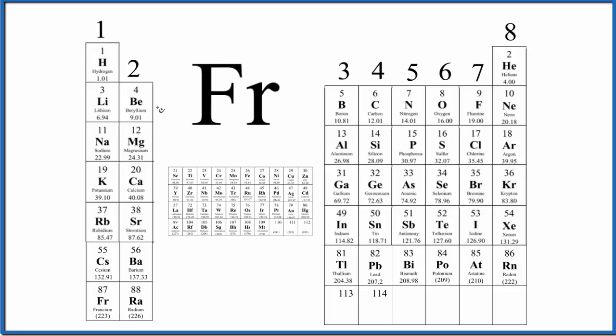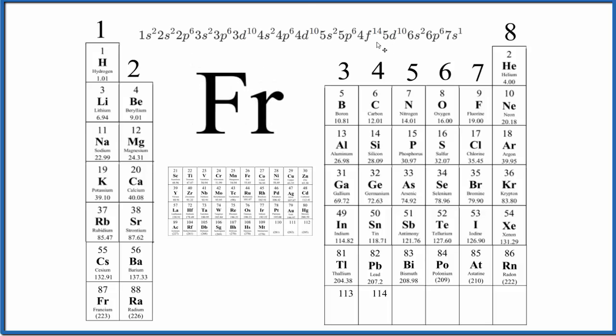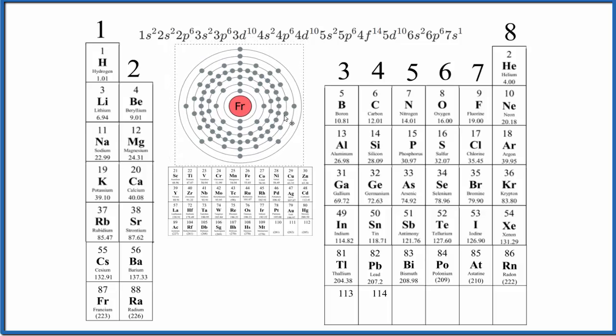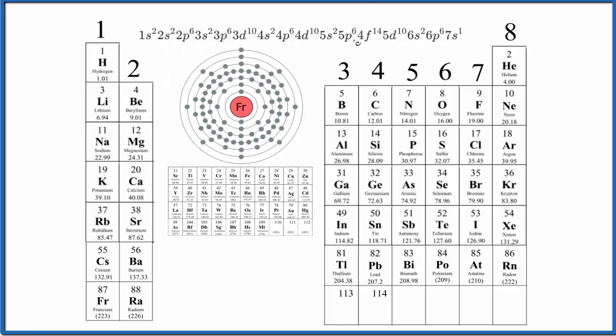We could also look at the electron configuration for francium. The electron configuration shows us where all of the electrons are around the nucleus of the francium atom. And we can represent that visually like this here. If you look at the electron configuration, the highest energy level, that's the seventh energy level, that only has one valence electron.